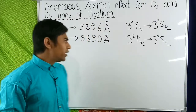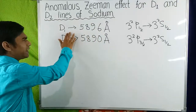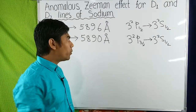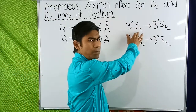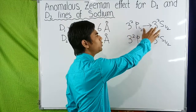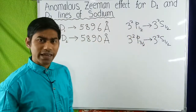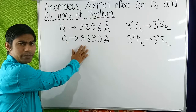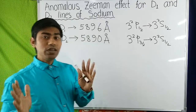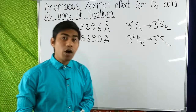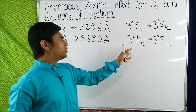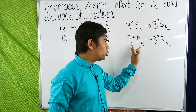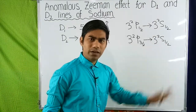The D1 line arises due to the transition from the 3²P½ level to the 3²S½ level. And the D2 line of sodium atom arises due to the transition of the electron from the 3²P 3/2 level to the 3²S½ level.